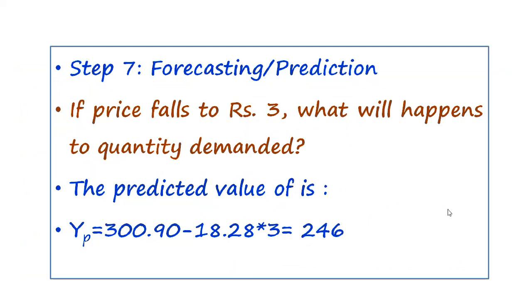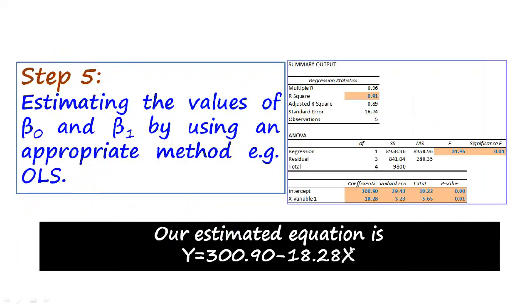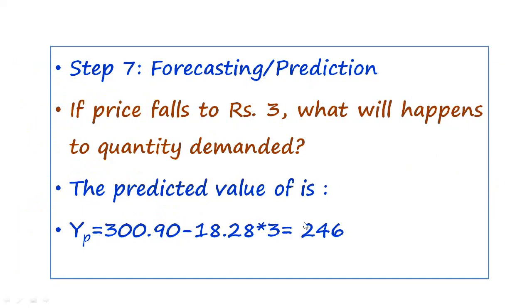Step seven is the ultimate purpose of econometrics: forecasting or predicting. In this case, we can predict the quantity demanded on the basis of price. For example, we can ask: what happens to quantity demanded if price falls to 3? We simply plug X equals 3 into the estimated regression equation, and the answer comes out to 246. So we can conclude that if price falls to 3, the quantity demanded of the commodity will be 246. This is the basics of econometrics.